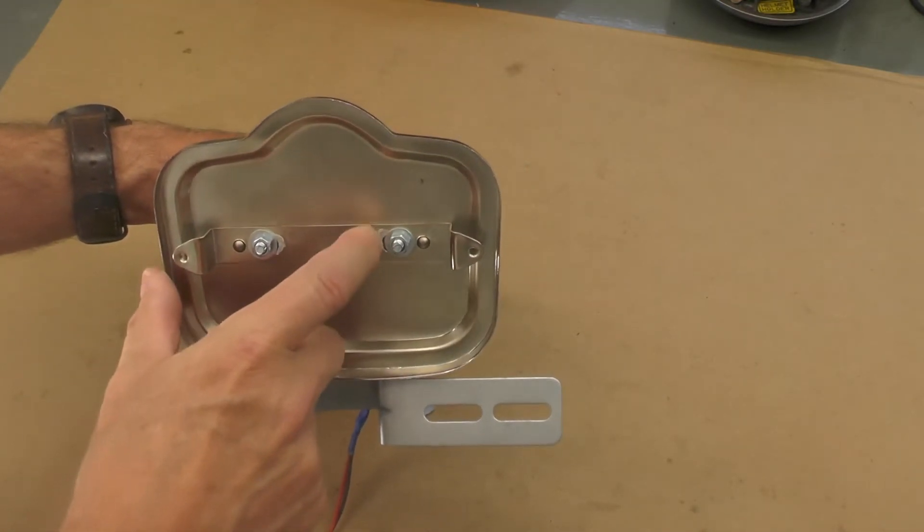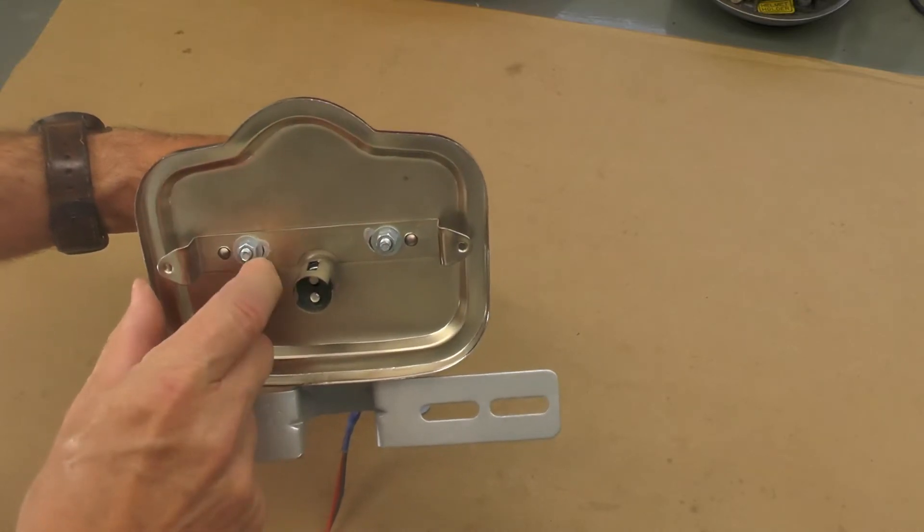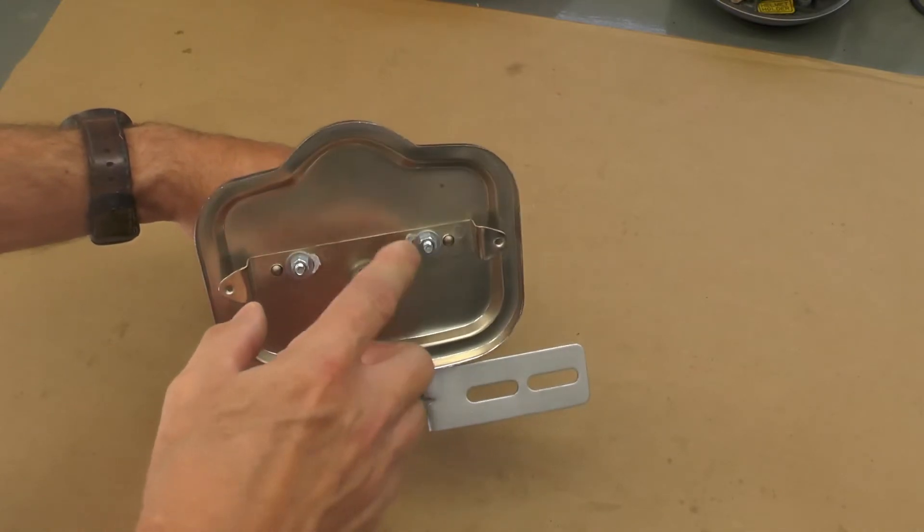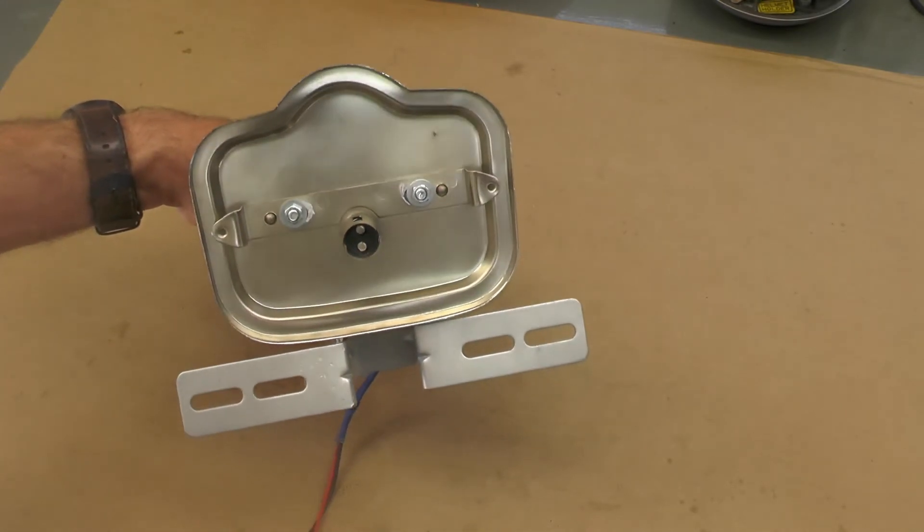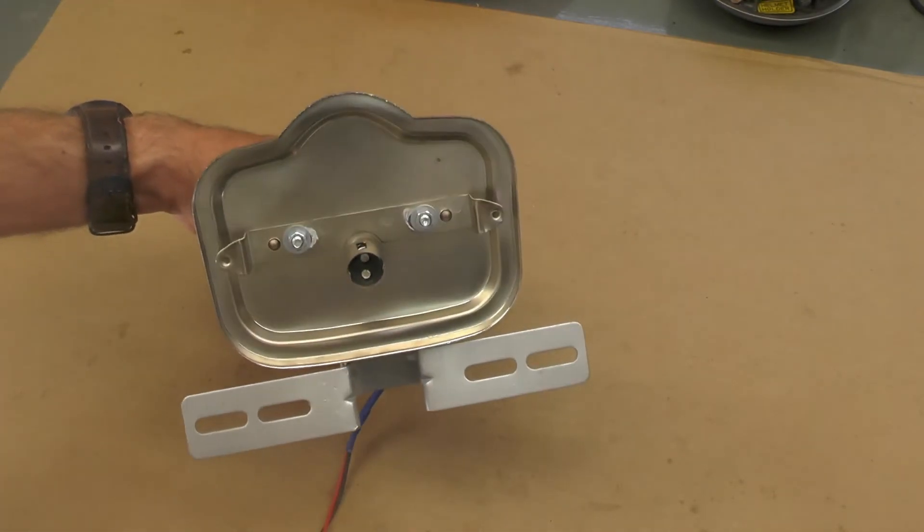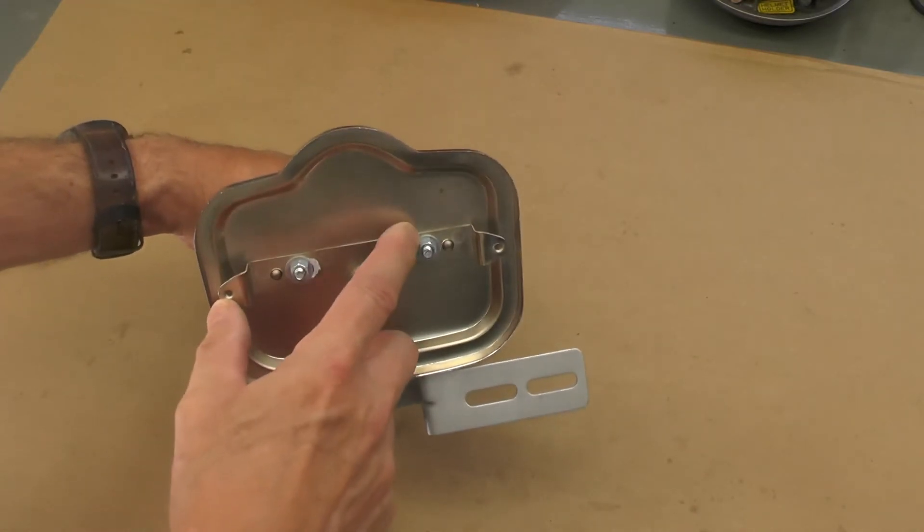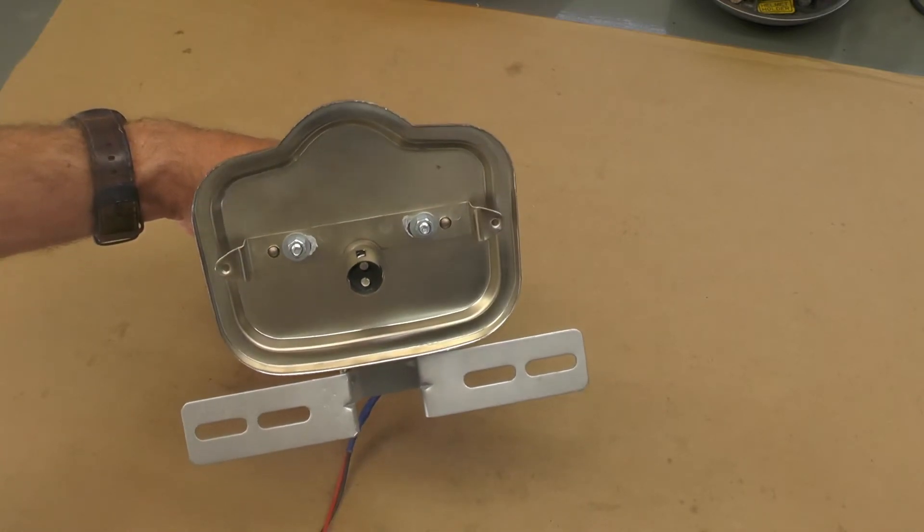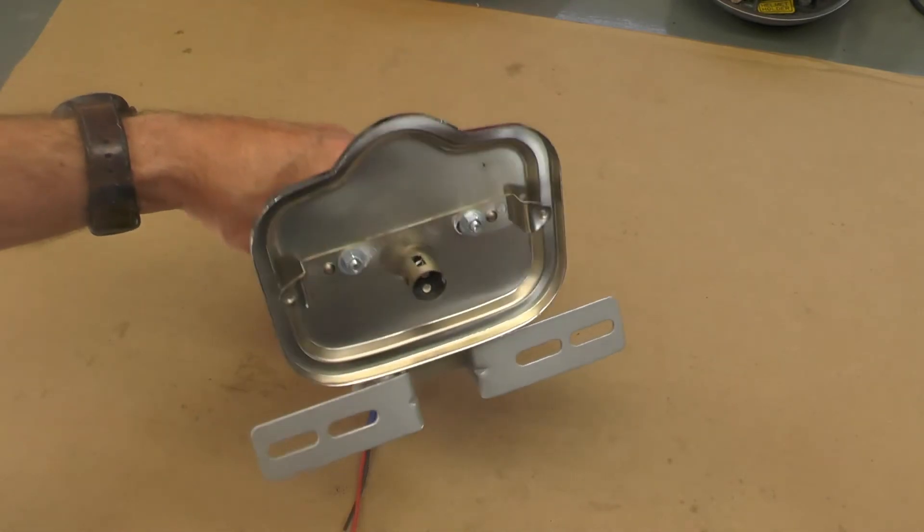If you're concerned, by the way, about this raw steel here, because I took all the zinc and or chrome off of it, you could seal that with a little clear coat on a brush, you could spray it, you could paint it. There's a lot of things you could do to prevent rust from reoccurring on that bare steel. So that's not a real problem either.